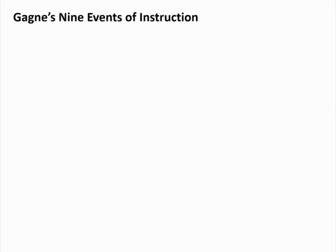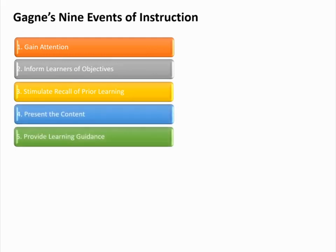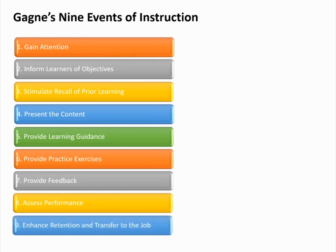Gagné's 9 events are: 1. Gain attention; 2. Inform learners of objectives; 3. Stimulate recall of prior learning; 4. Present the content; 5. Provide learning guidance; 6. Provide practice exercises; 7. Provide feedback; 8. Assess performance; 9. Enhance retention and transfer to the job. While some believe the 9 steps are ironclad rules, it has been noted that the 9 steps are more like guidelines or a checklist — general considerations to be taken into account when designing instruction. Although some steps might need to be rearranged, or might be unnecessary for certain types of lessons, the general set of considerations provides a good checklist of key design steps.